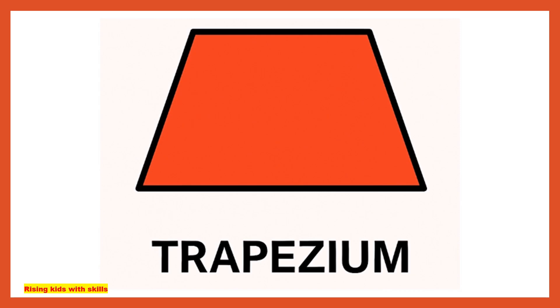This is called a decagon. It has ten sides and ten corners. Trapezium — it is a four-sided shape with one pair of opposite sides parallel.